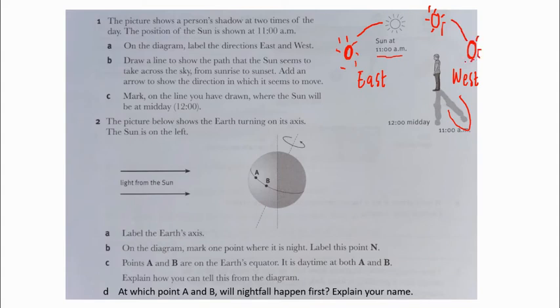Part C: Mark on the line you have drawn where the sun will be at midday. At midday at 12, it would be this one. So this is the answer for number one.